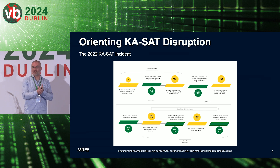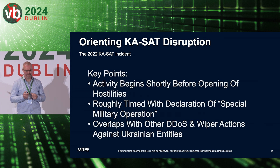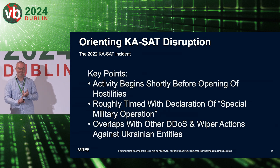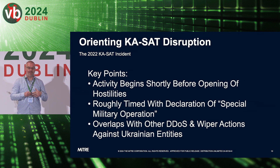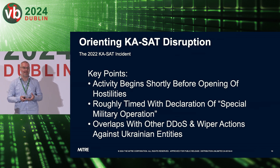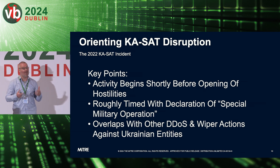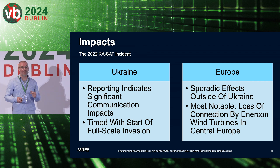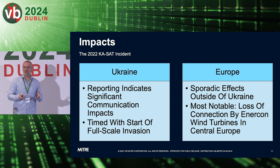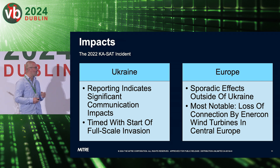This includes the impact on German wind turbine manufacturer Enercon. We see very close sequencing between the start of hostilities in Ukraine and the timing around the KA-SAT targeting — both from the DDoS and from the malware deployment perspectives. Very interesting coordination between potentially three different entities: traditional Russian military, the AcidRain deployment, and the unlinked DDoS activity. The activity begins shortly before the opening of hostilities and is roughly timed with the declaration of the special military operation.